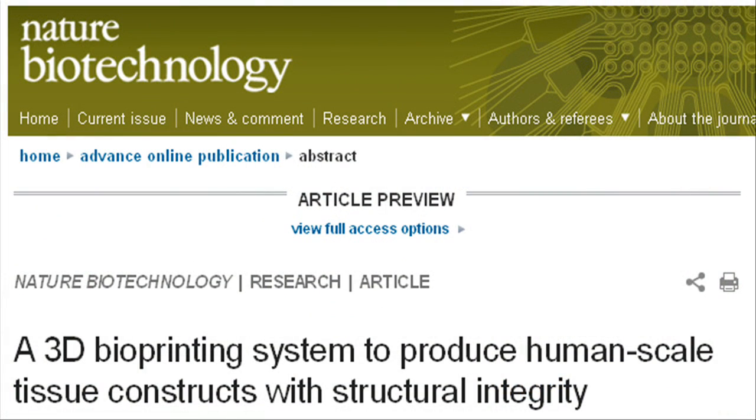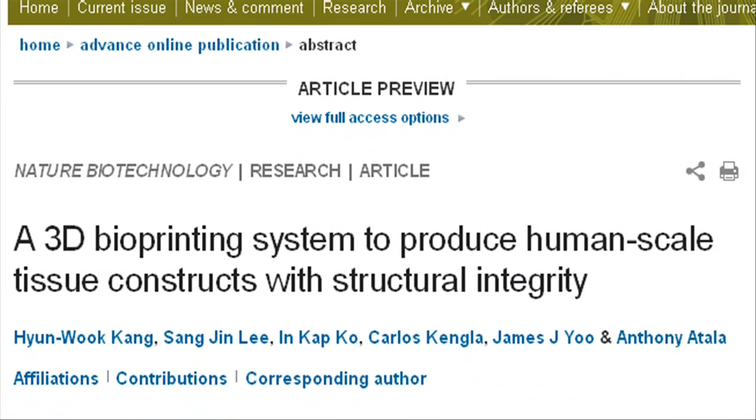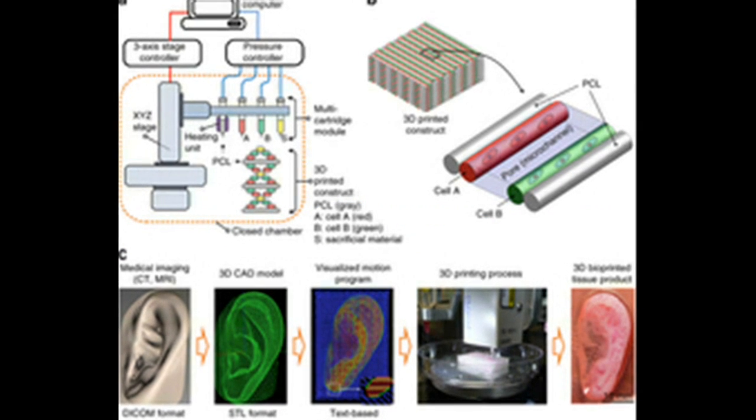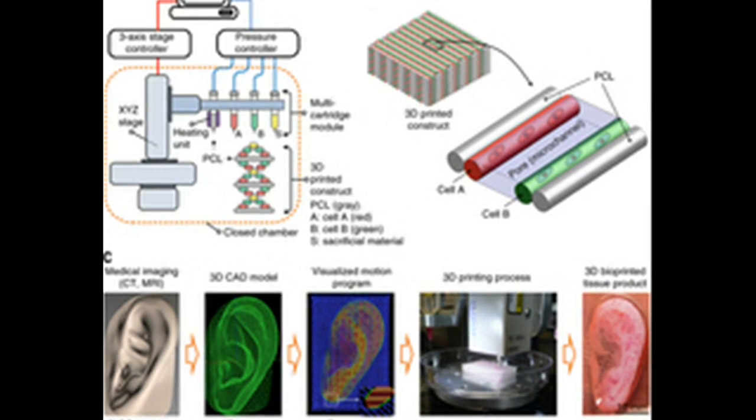Reporting in Nature Biotechnology, the scientists said they printed ear, bone, and muscle structures. When implanted in animals, the structures matured into functional tissue and developed a system of blood vessels.